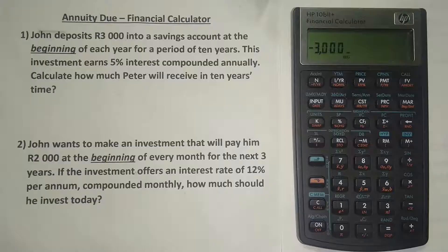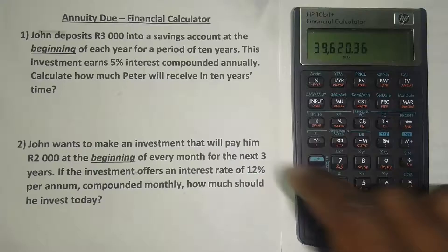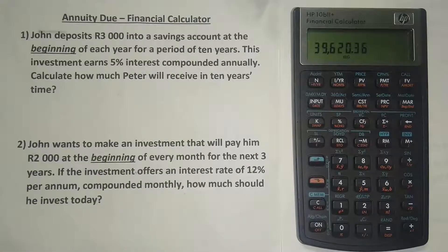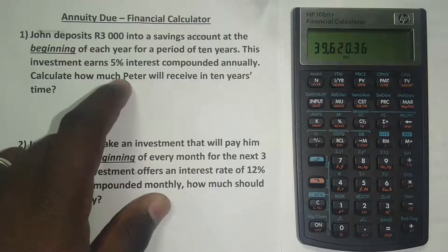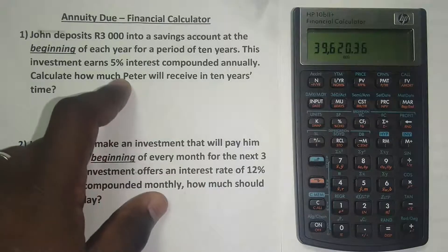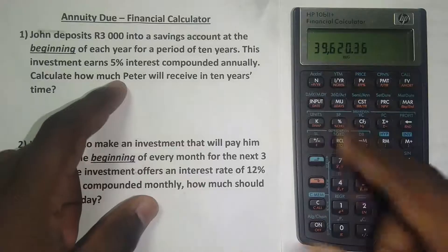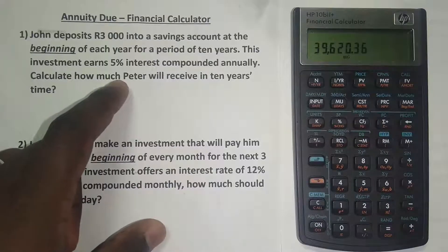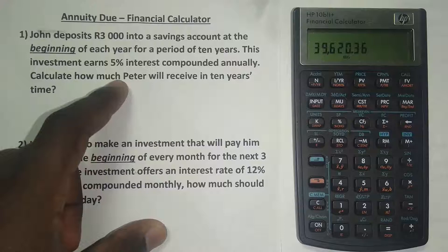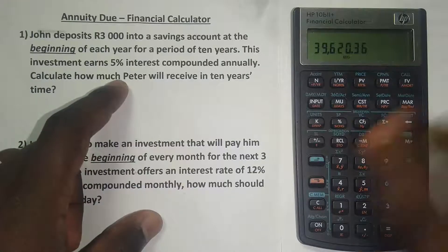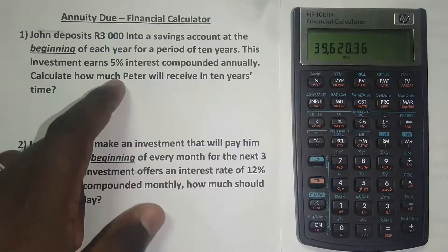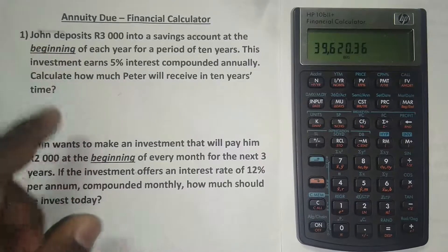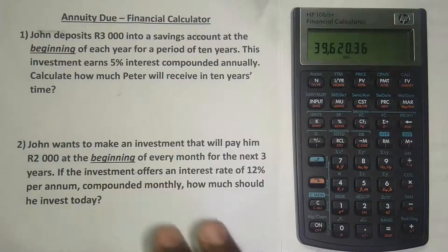We make the payment negative so that our future value appears as a positive. Then we press PMT and press FV. There is our future value: if he puts 3,000 at the beginning of each year for the next 10 years in an account earning 5% interest compounded annually, he will get 39,620.36. That is how much he will receive in 10 years time. Note: if you leave PMT as a positive, the FV will appear as a negative — it's just a sign convention.